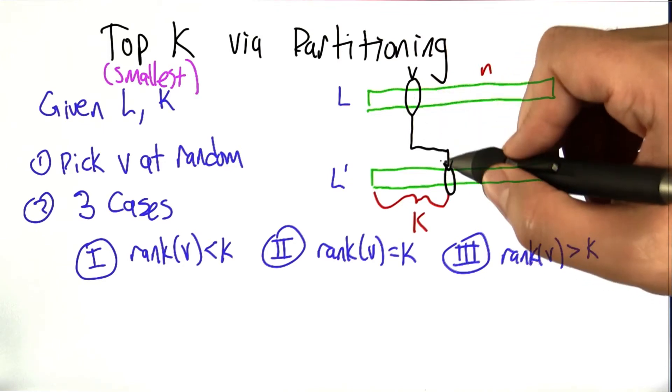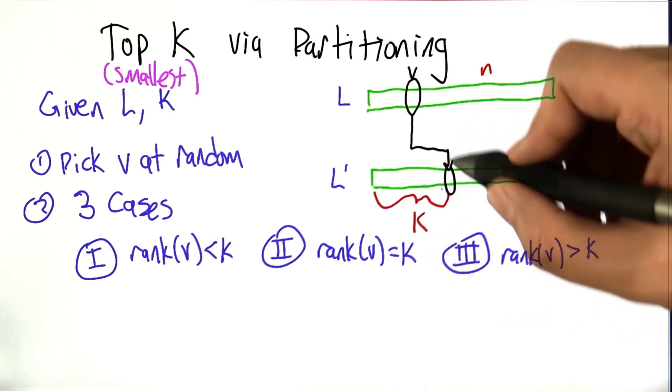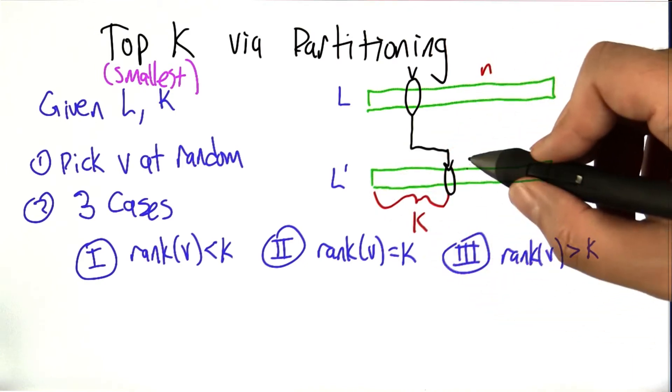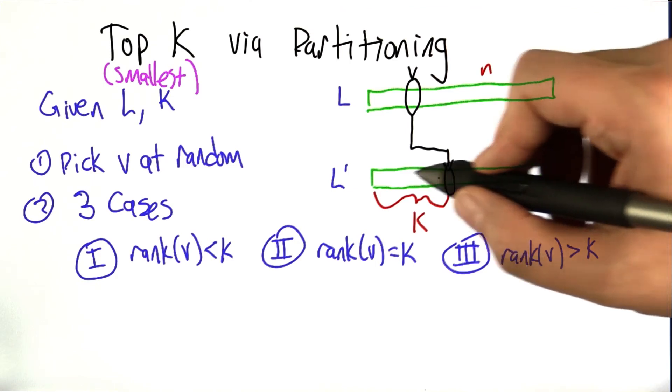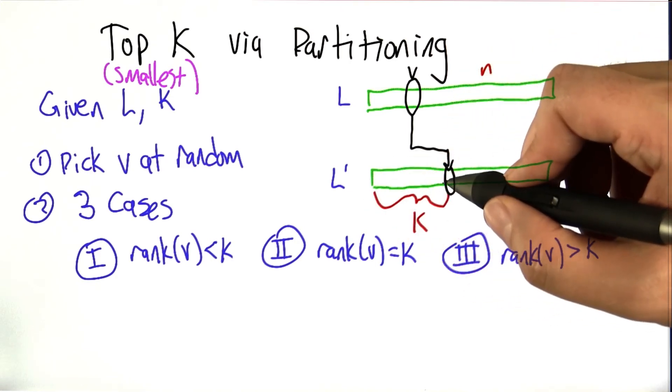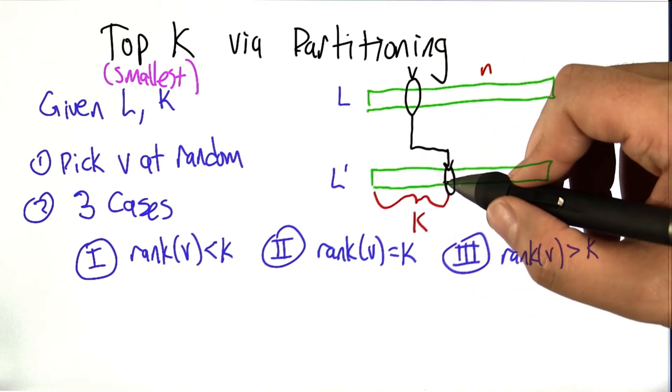So what happens when we run partitioning on that value v is it's going to separate all the values of L into the ones smaller than v, equal to v, and greater than v. And that happens to be at position k, so the ones on the first k positions here are exactly the top k for the list, the smallest k elements that we were looking for.